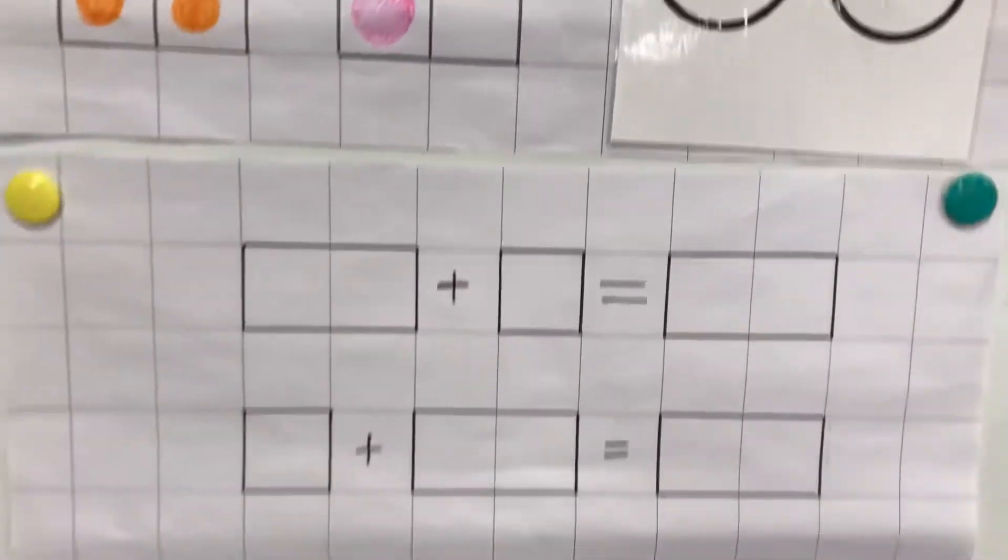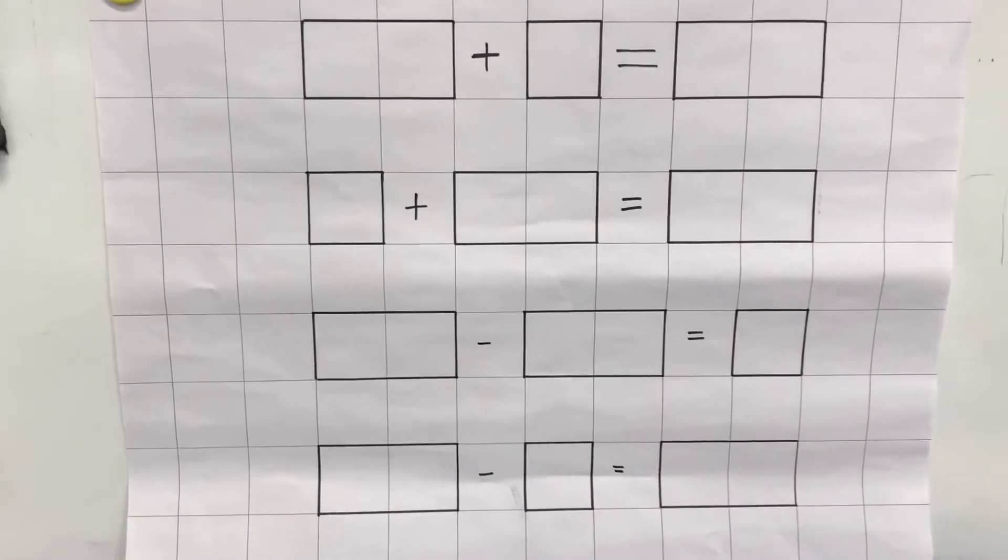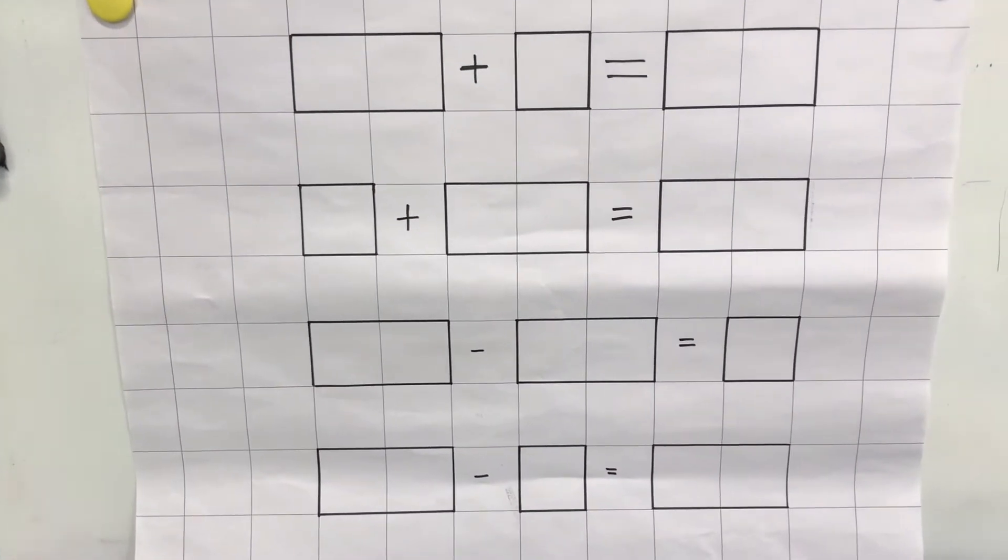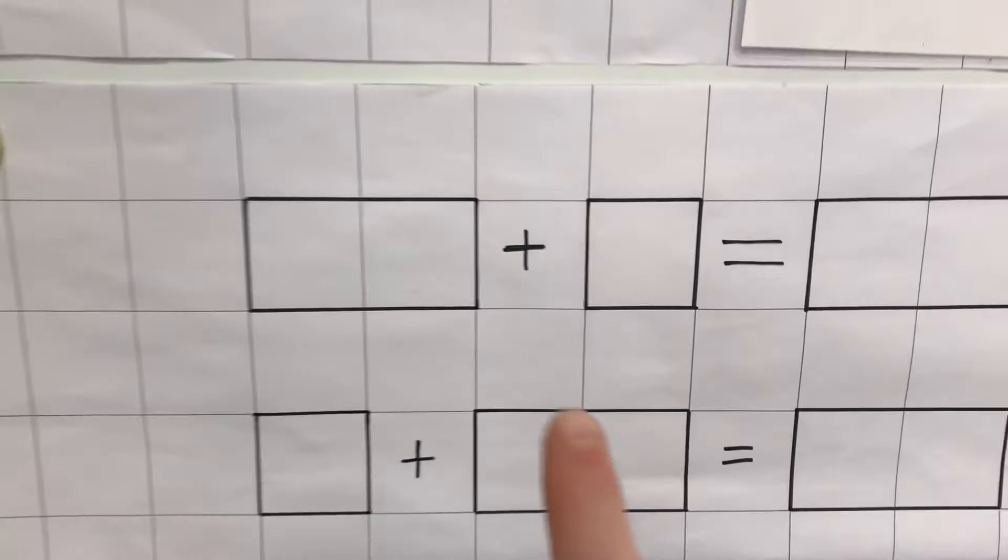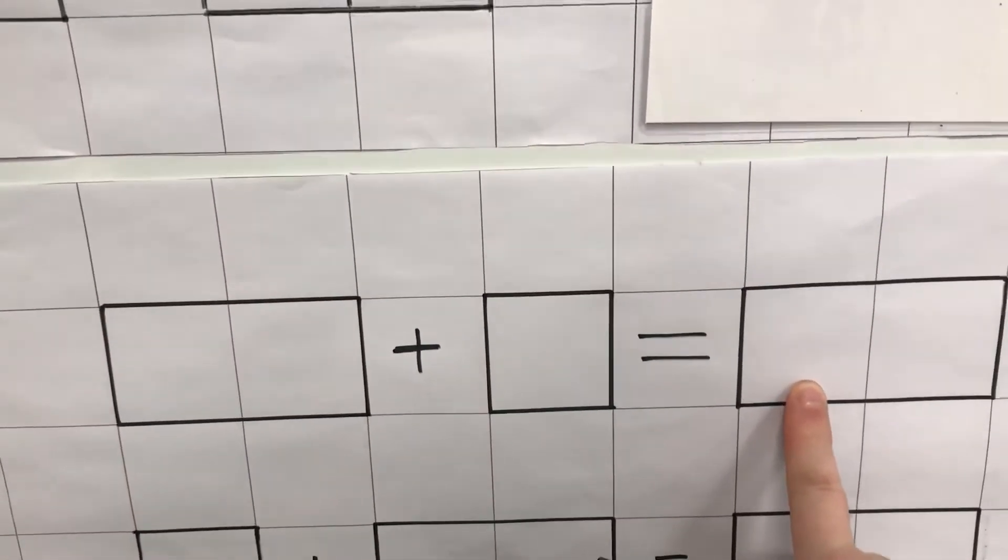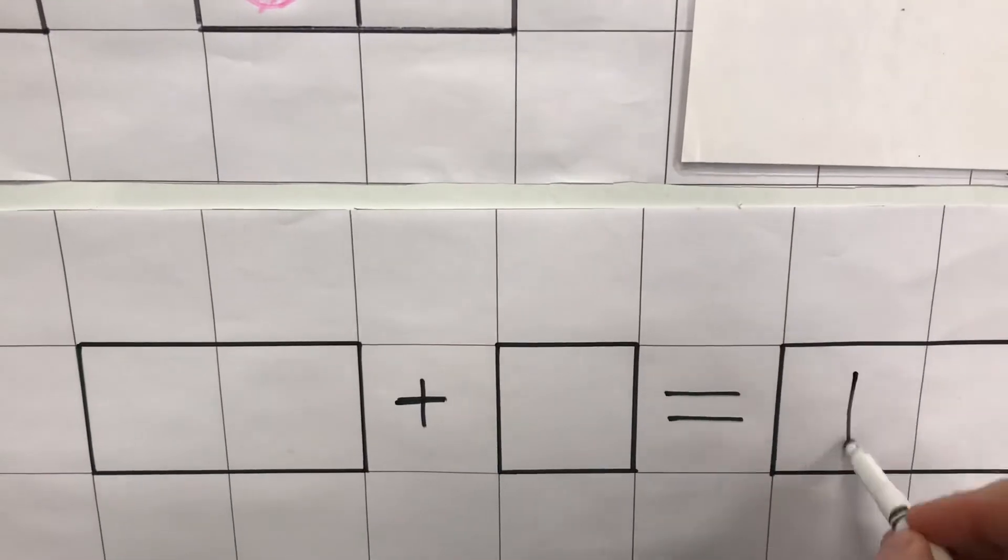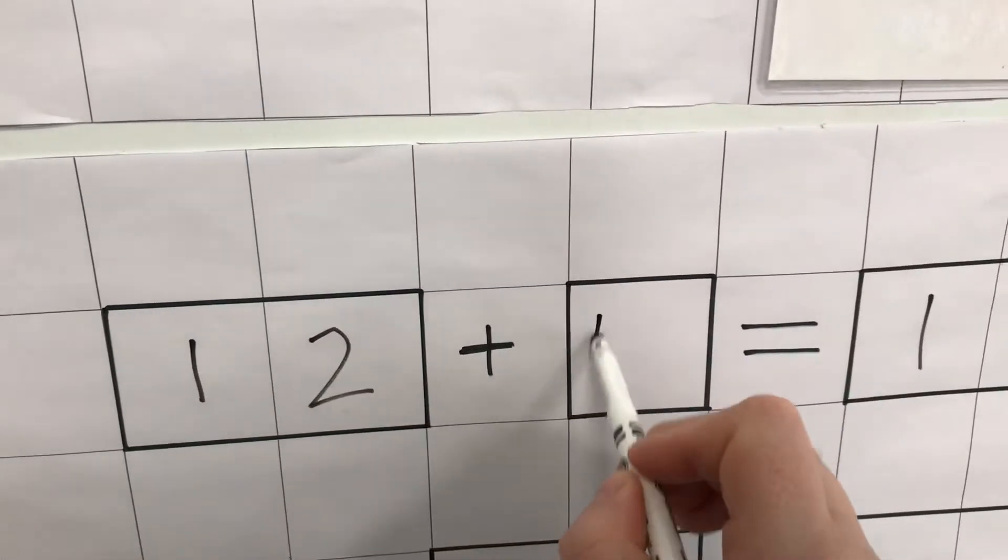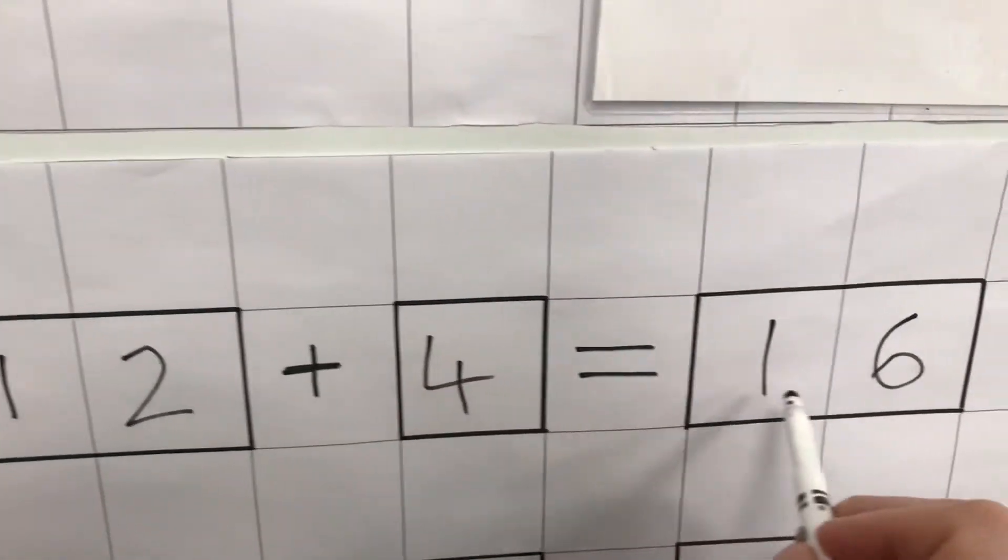So here are my empty number sentences waiting for my fact family. The first one is an add. So I know my answer is going to be the biggest number of the three, which is 16. So my first number sentence is going to be 12 add 4. It's the same as 16.